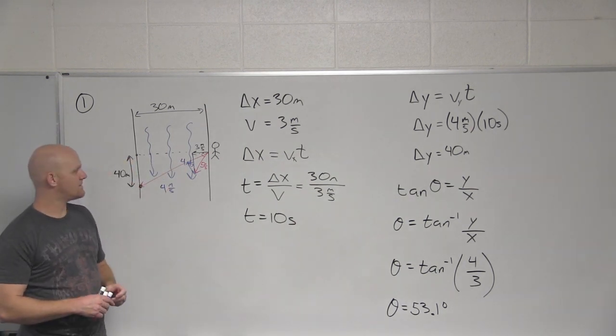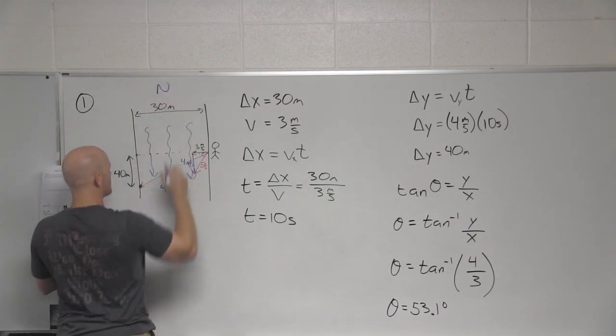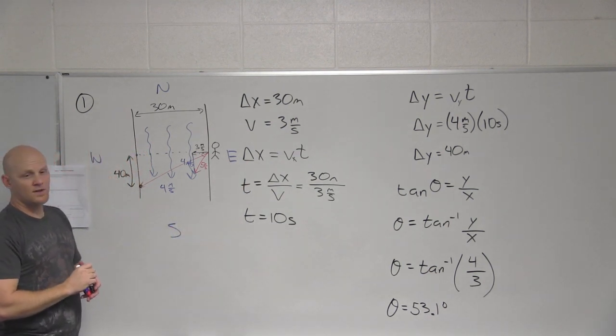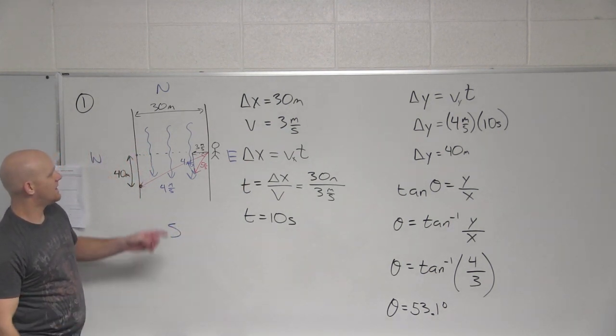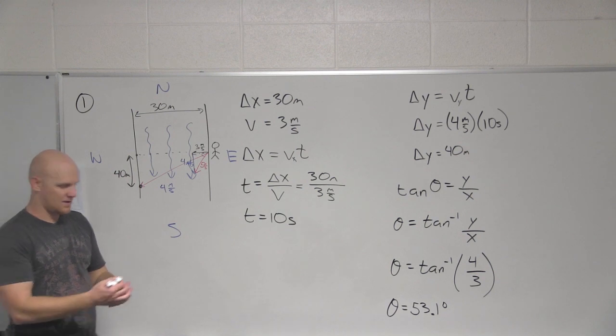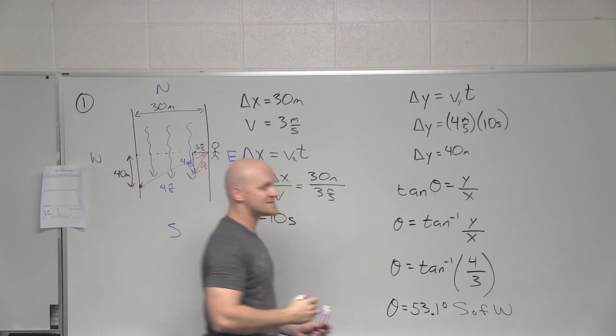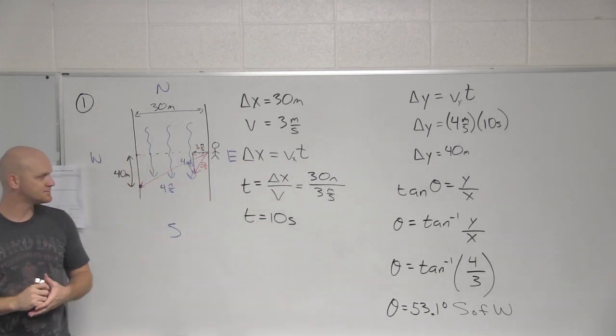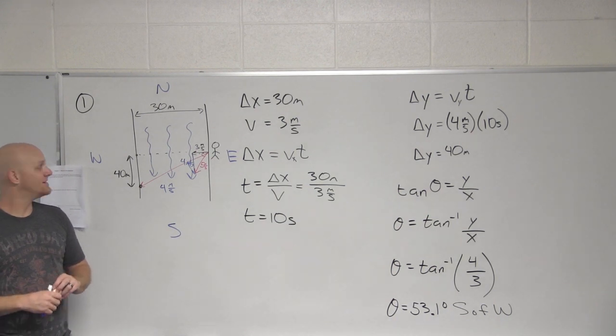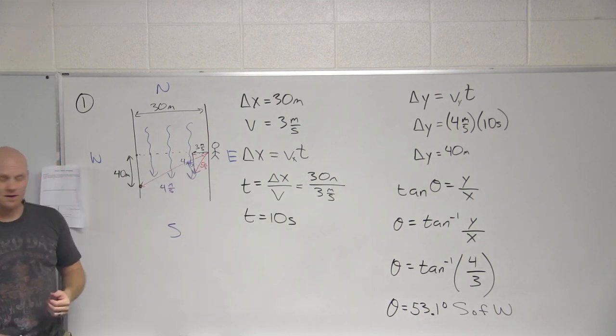And how would we describe where that fifty-three point one degrees is? Because keep in mind that with the way this problem is worded, this is north, this is south, this is west, this is east. So you call it southwest, you could call it, in this case, oftentimes the way it's worded is, in this case, it is south of west. So fifty-three point one degrees south of west. It's probably the most common way you'll hear it. If we said west of south, would that still be true? No, because west of the south, this is the south mark, west of south would be this angle, not this one. That's why we've got to be careful, south of west.